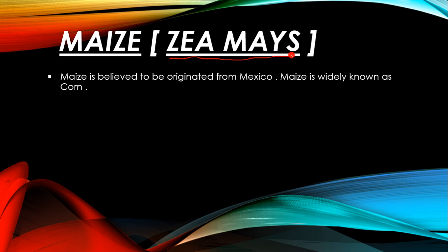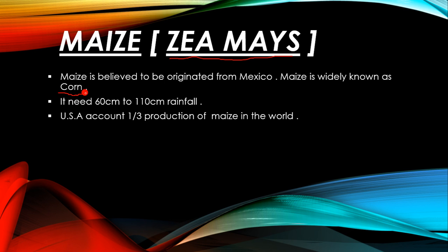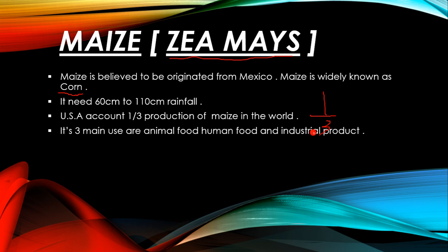Now, maize. The scientific name of maize is Zea mays. Maize is believed to have originated from Mexico and is widely known as corn in Europe and America. It needs 60 to 110 centimeters of rainfall. The USA accounts for one-third of world maize production. Its three main uses are animal food, human food, and industrial products.